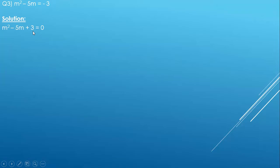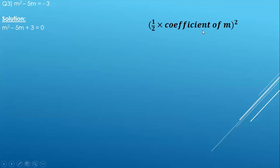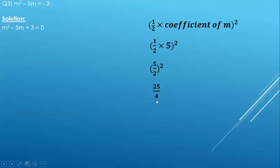Step one is to make the coefficient of m squared equal to 1. Since the coefficient of m squared is already 1, we move to step two: take half of the coefficient of m and square it. The coefficient of m is 5, so half into 5 the whole square gives us 5 upon 2 the whole square, which is 25 upon 4.